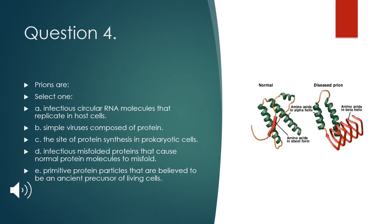Question 4: Prions are — A. infectious circular RNA molecules that replicate in host cells; B. simple viruses composed of protein; C. the site of protein synthesis in prokaryotic cells; or D. infectious misfolded proteins that cause normal protein molecules to misfold.